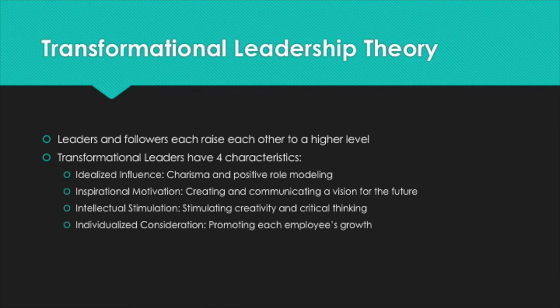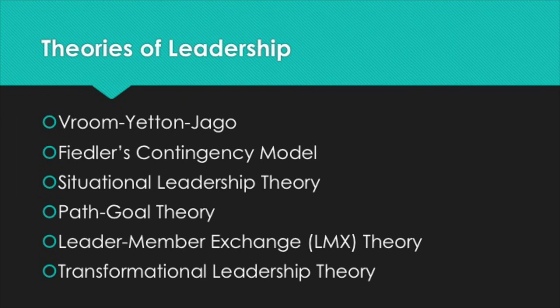To recap: we have the Vroom Yetton Jago Model, where you come to a fork in the road and use a decision tree. Fiedler's Contingency Model, which has the least preferred co-worker scale. The Situational Leadership Model, where it depends on the situation — delegate, tell, sell, or participate. Path Goal Theory, all about leaders helping subordinates reach their own goals. The LMX theory about in-groups and out-groups. And Transformational Leadership Theory, about leaders and subordinates transforming each other through idealized influence, inspirational motivation, intellectual stimulation, and individualized consideration.